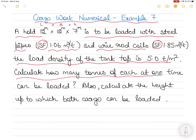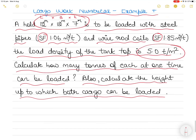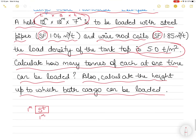We have to calculate how many tons of each cargo can be loaded at one time, and also calculate the height up to which both cargoes can be loaded. The dimensions of the cargo hold, the stowage factors, and the load density are all given. Let's understand what load density means first. When the load density is 5 tons per meter square, that means for every 1 meter by 1 meter area you can load a maximum of 5 tons. This cargo hold has a length and breadth of 12 by 12 meters.